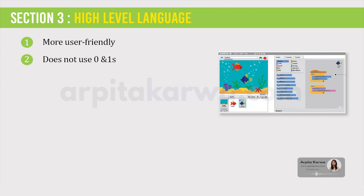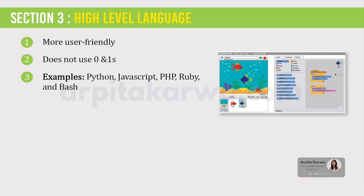Some newer high level languages are scripting languages. This means that they are not compiled or translated into machine language until just before the code is executed at run time. Examples of high level languages are C++, Fortran, Java and Python.